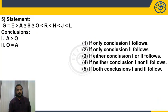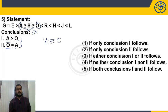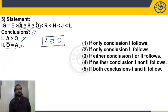Question 5 is a single statement. Both conclusions are about A and O. The operators between A and O are ≥, ≥, ≥ — giving A ≥ O as the definite conclusion. First conclusion is A > O — can we say definitely? No, it may be equal. Second conclusion is O = A — can we say definitely? No, it may be greater than. But one of these two must hold, since A ≥ O means either A > O or A = O. This leads to 'either or' — either one or two follows.